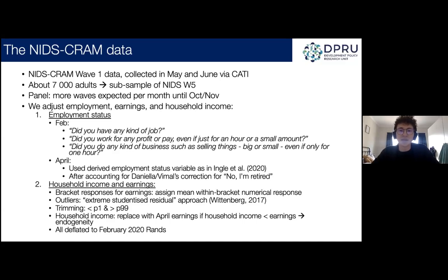The latest nationally representative survey data we have is the quarterly labour force data, the latest of which is the first quarter of 2020, covering until the end of March — the pre-lockdown period. The second quarter data is expected in August. So a big motivation for the NIDS-CRAM was to provide rapid, reliable data to inform policy now. It's planned as a panel survey — a sub-sample from wave five of the NIDS conducted in 2017 — and they'll follow up the sample every month or two through the end of next year.